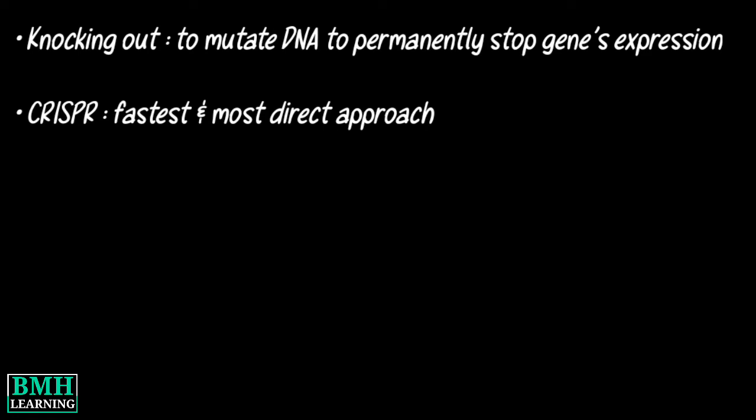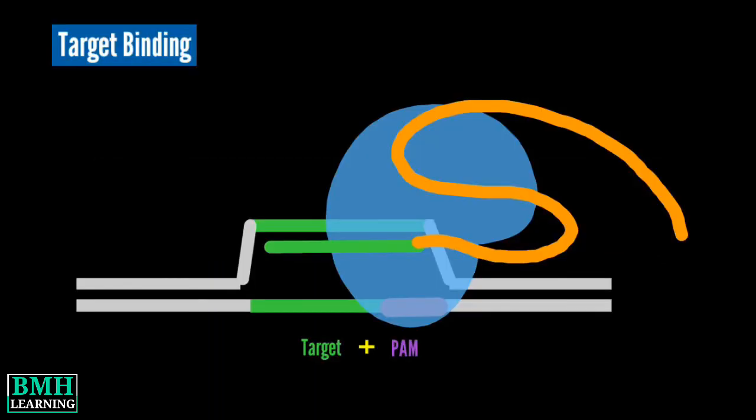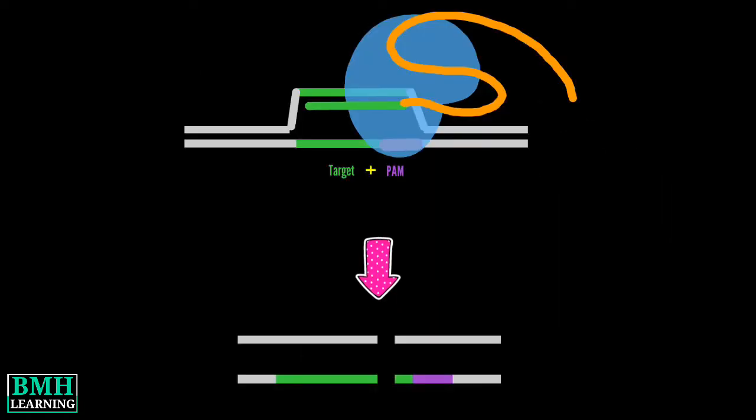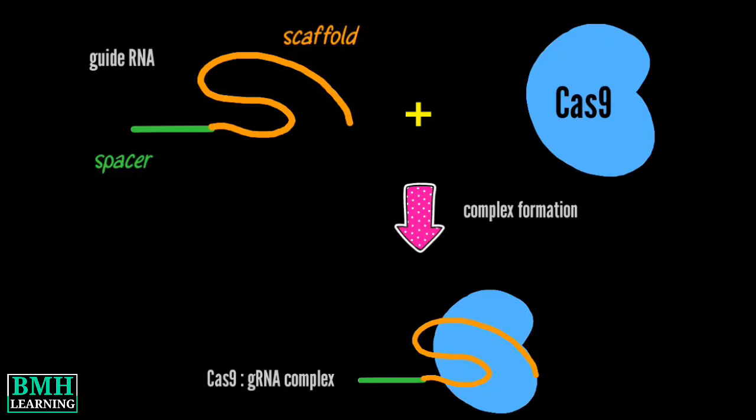How CRISPR gene knockout works: A CRISPR-associated enzyme is used to cleave a target DNA, resulting in a double-strand break. The Cas enzyme is directed by a guide RNA to a user-defined site in the genome, and then the Cas enzyme cuts the DNA.